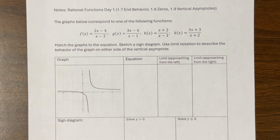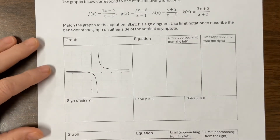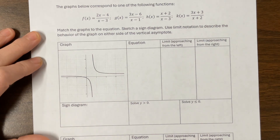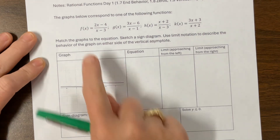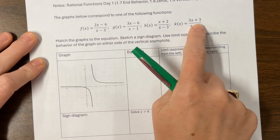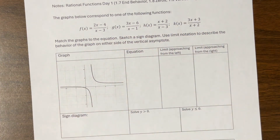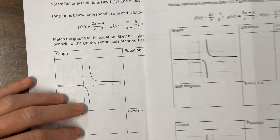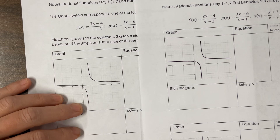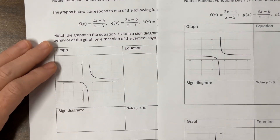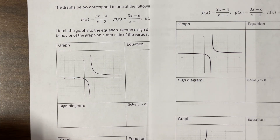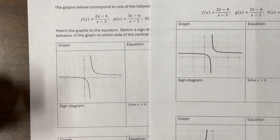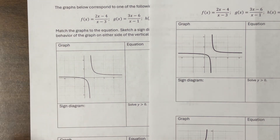But now we are looking at what happens with my vertical asymptotes. What I decided to do for this one is I have four different functions and four different graphs. We're going to try to match the graph to the equation, and then we're going to do other stuff.